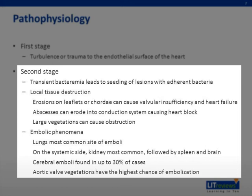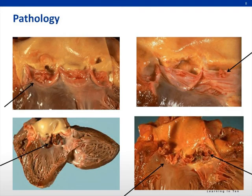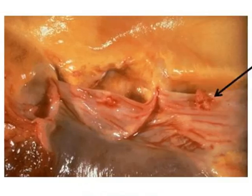One should note that aortic valve vegetations have the highest chance of embolization. These are gross specimens of aortic valve endocarditis. The picture on the top left is a close-up of the aortic valve transected along one of the commissures. You can identify it as aortic valve due to the presence of the coronary artery ostium present just distal to the semilunar valves. The arrow is pointing to the vegetation attached to the ventricular side of the aortic valve.